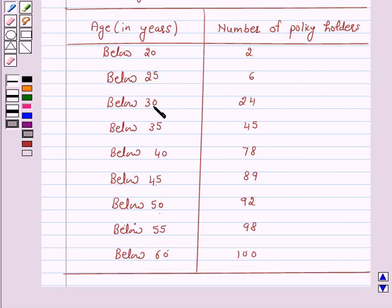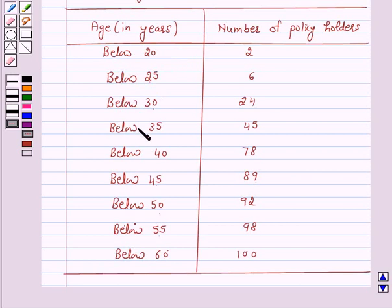Here 20, 25, 30, 35, 40, 45, 50, 55, and 60 are the upper limits of the respective classes. So the classes should be: below 20, 20 to 25, 25 to 30, 30 to 35, 35 to 40, 40 to 45, 45 to 50, 50 to 55, and 55 to 60. Let us make a column for the class interval.